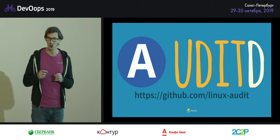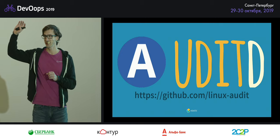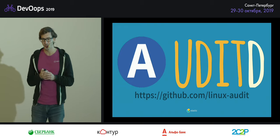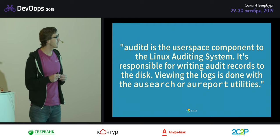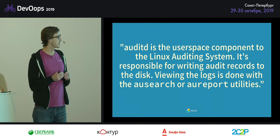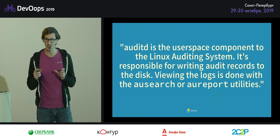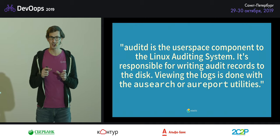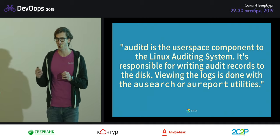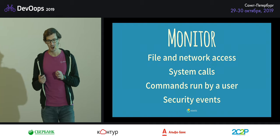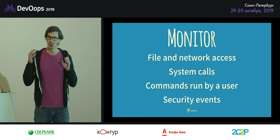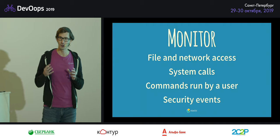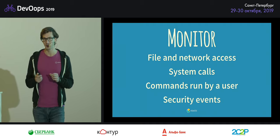So let's start with AuditD. Who is using or has heard of AuditD? Not enough. AuditD is the user space component of the Linux auditing system — it writes records. One key thing to keep in mind: AuditD doesn't block anything. AuditD is just a silent watcher. It just keeps track of whatever bad stuff is happening. If you want to block an attack, you'll need additional tools. AuditD is really just for keeping track of what is happening: file and network accesses, what users are doing, logins, any kind of security-related event.